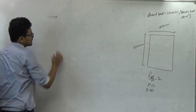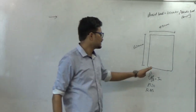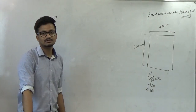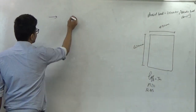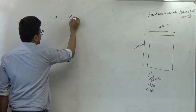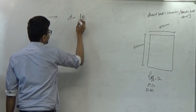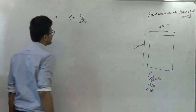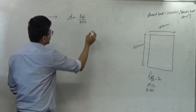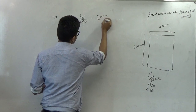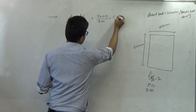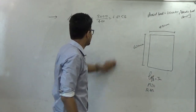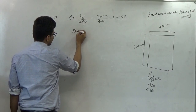First we will determine whether the given column is a short column or a long column. For that we find lambda, given by L effective divided by the least lateral dimension. The least lateral dimension is 450 mm, so lambda equals 3000 by 450, which is 6.67, and this is less than 12. Therefore we proceed with the design of a short column.